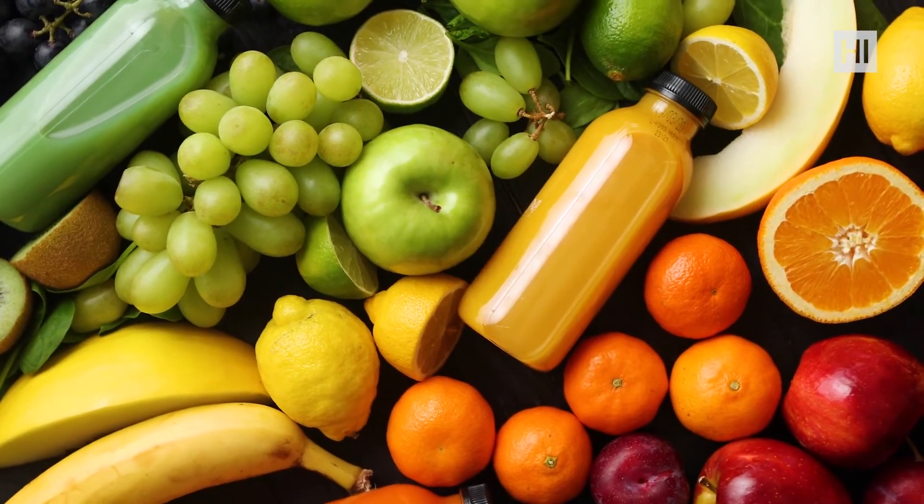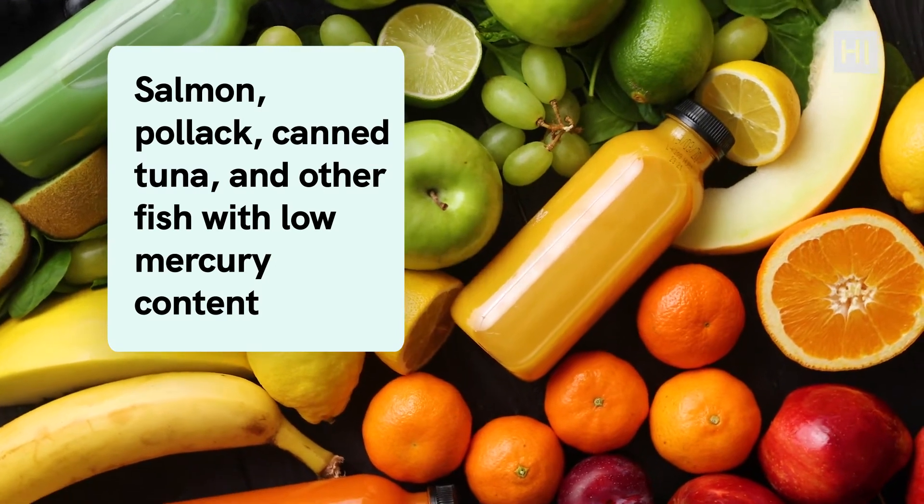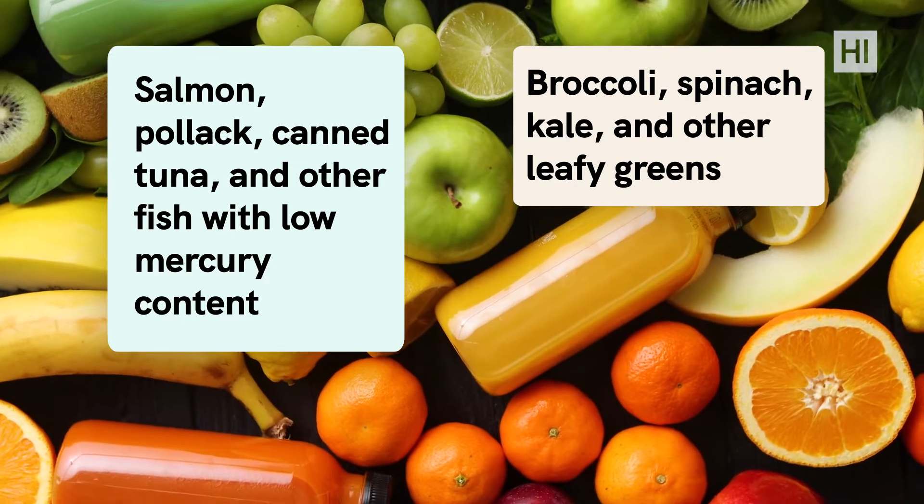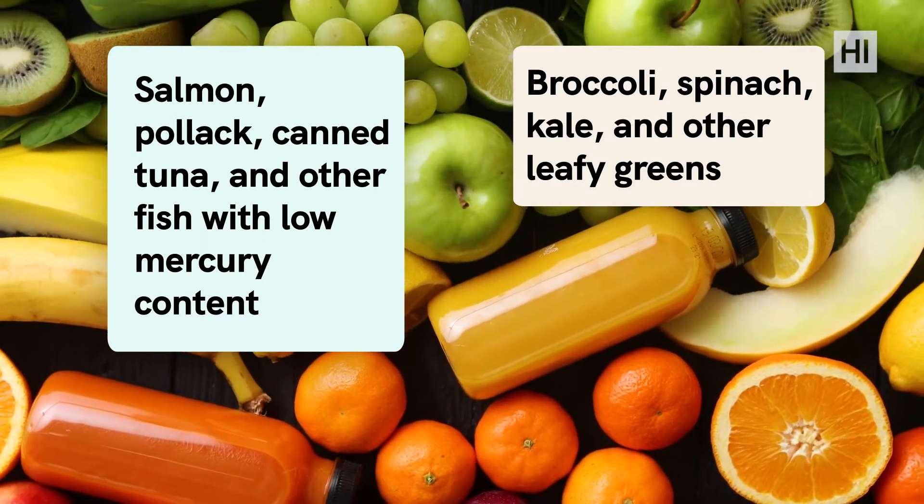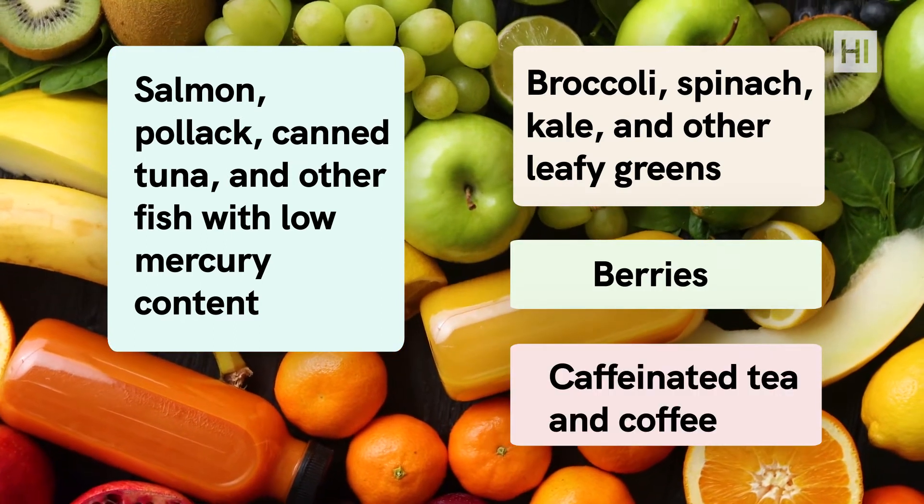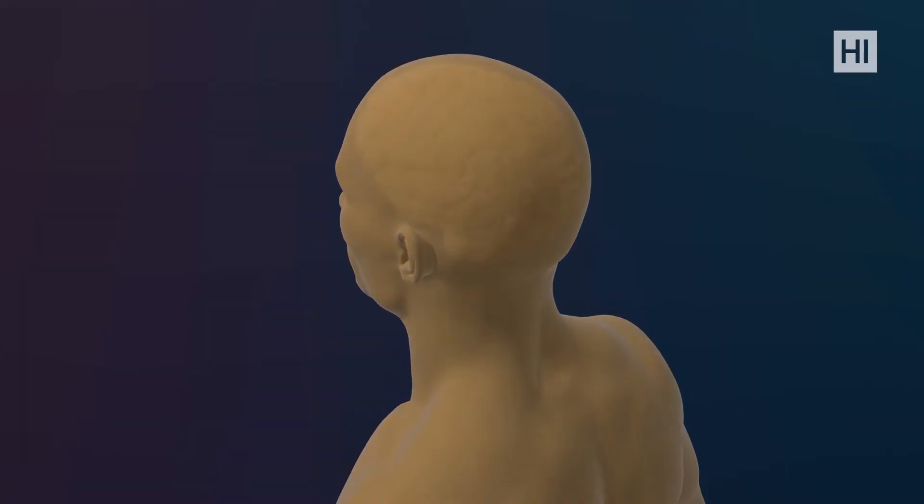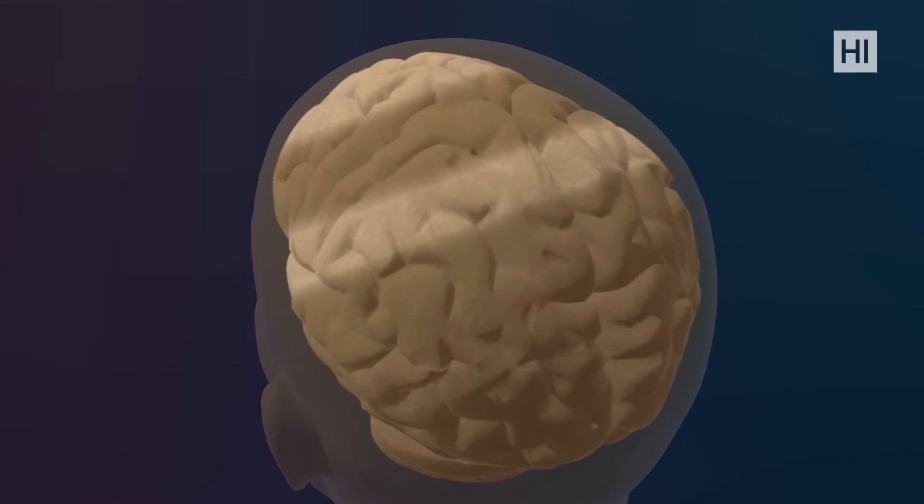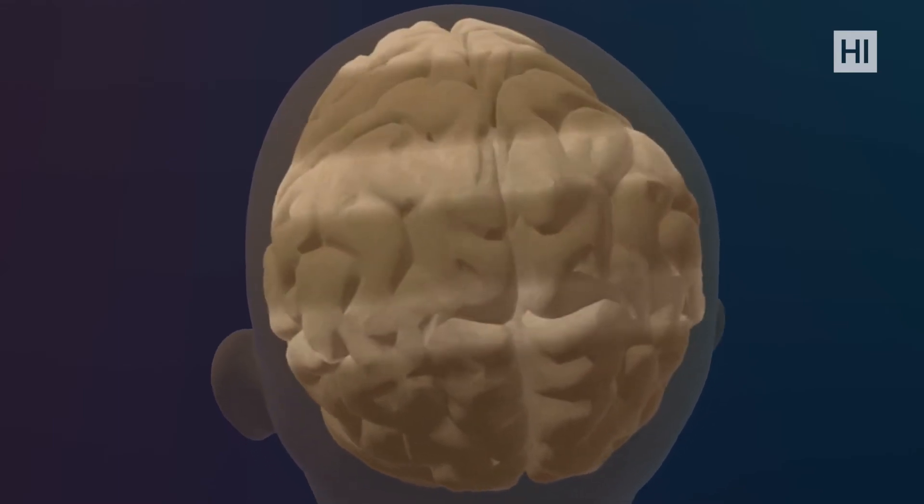Here are some food examples for your eating window: salmon, pollock, canned tuna, and other fish with low mercury content, broccoli, spinach, kale, and other leafy greens, berries, caffeinated tea and coffee, nuts. Such foods will boost your brain functions and give you all the necessary nutrients that will help manage your fasting window much more easily.